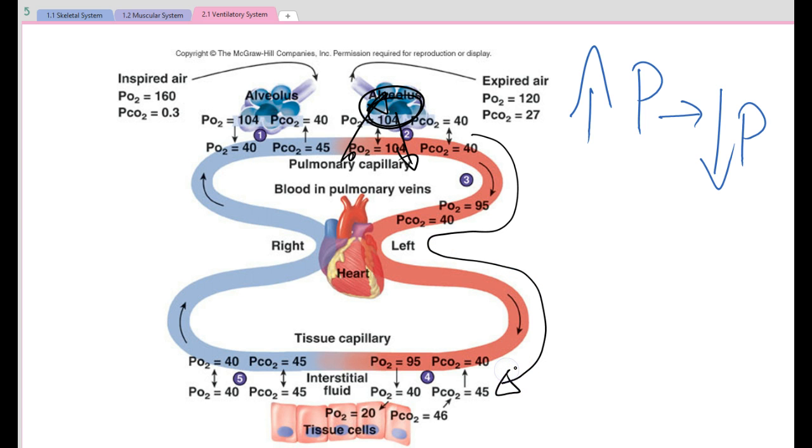Now, as the oxygen is being used, the pressure of oxygen drops. The pressure of carbon dioxide increases in the blood because it's attracting carbon dioxide from the muscle. So as the blood returns to the alveoli,